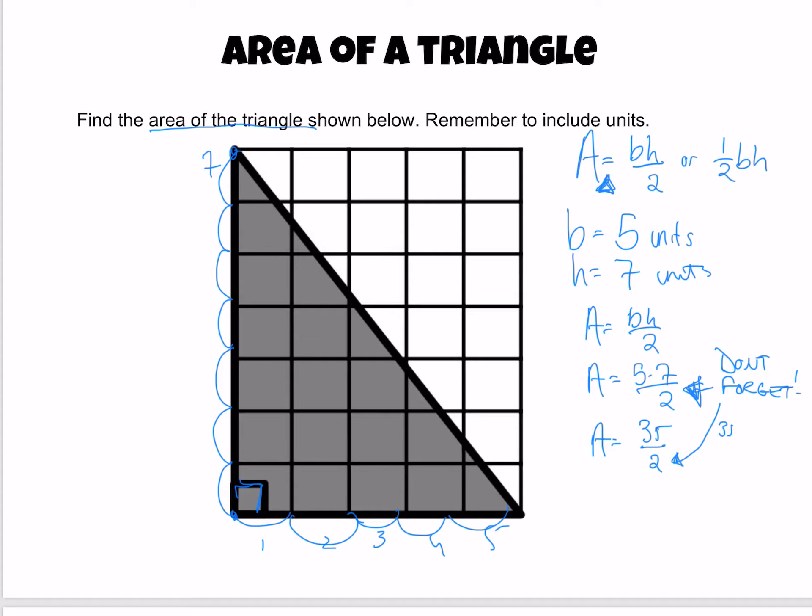Because when we say 35 divided by two, that's going to give us our answer. We should get 17.5, 17 and 5 tenths.